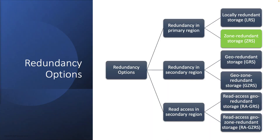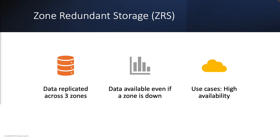Next, we have Zone Redundant Storage, shortly ZRS. As you can guess from the name, the redundancy is handled through multiple zones. This again falls under the redundancy in the primary region category. It replicates your data synchronously across three Azure availability zones, providing at least 12 nines of durability. This ensures the data is available even if one zone is down, as the data is available in other zones as well. This makes it ideal for high availability and data governance requirements.